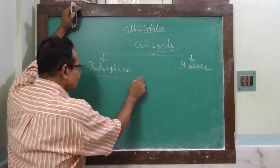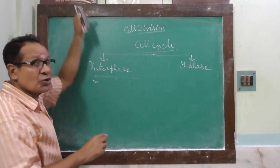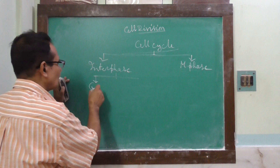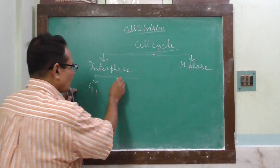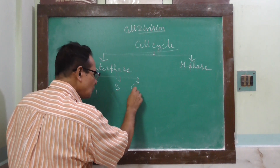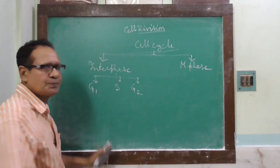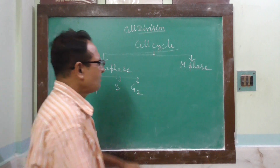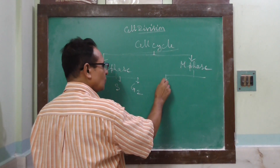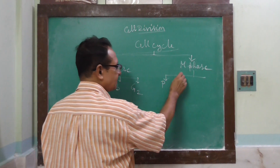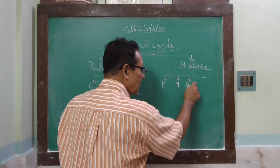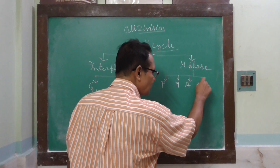Interphase is again divided into three sub-phases: G1 or gap 1, S or synthetic phase, and G2 or gap 2. The M phase is divided into four phases: prophase, metaphase, anaphase, and telophase.